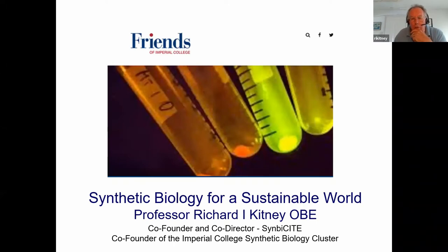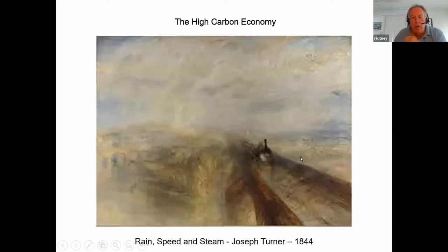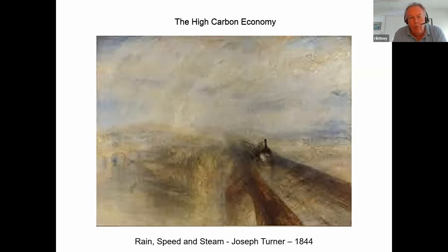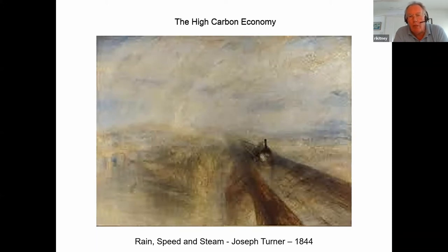I've been working in this field pretty much from the beginning, which was about 20 years ago. I wanted to start off with this painting, one of my favourites, which is by Joseph Turner — Rain, Speed and Steam, 1844 — just after the beginning of the coming of the railways. In another sense, it represents effectively the early phase of the high carbon economy.